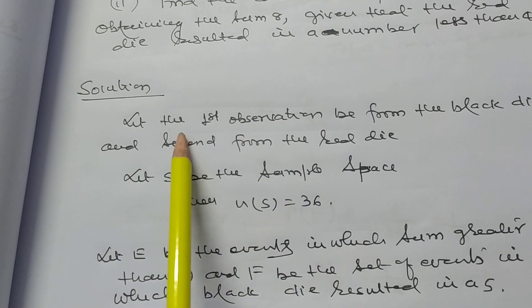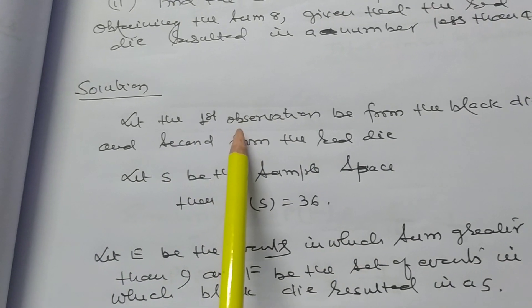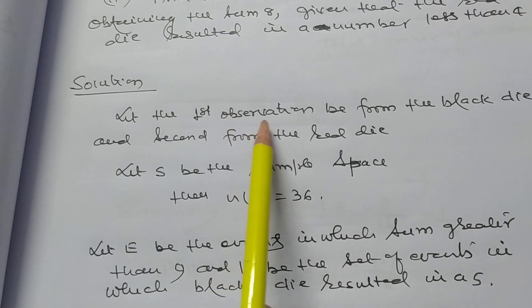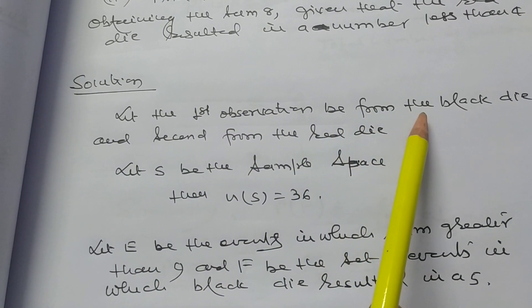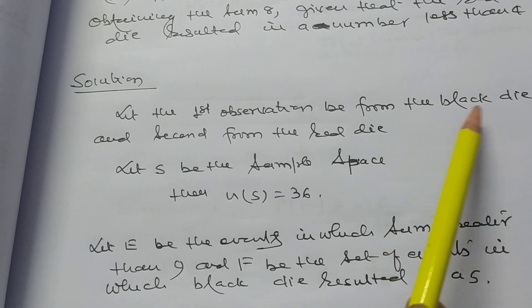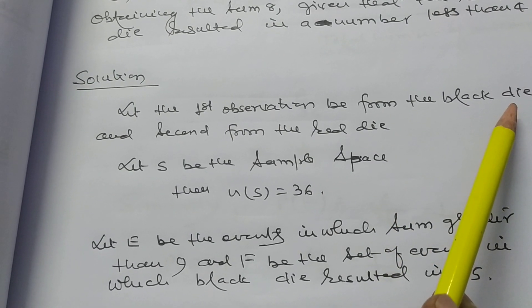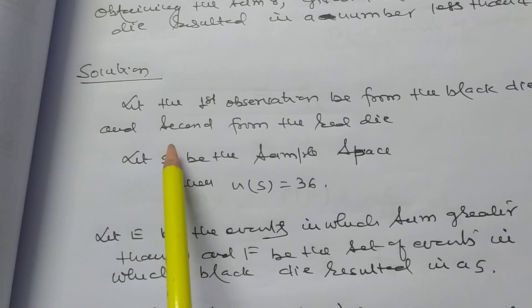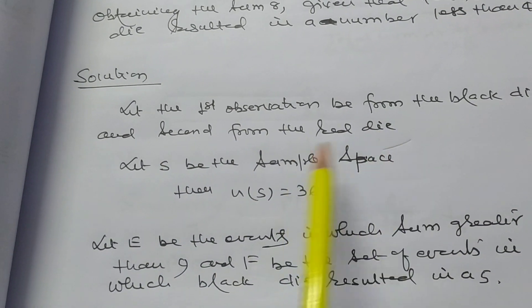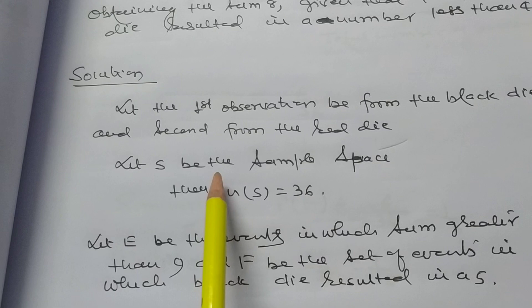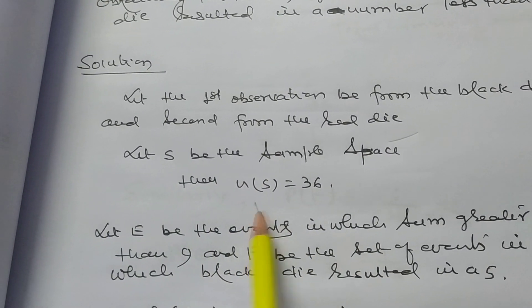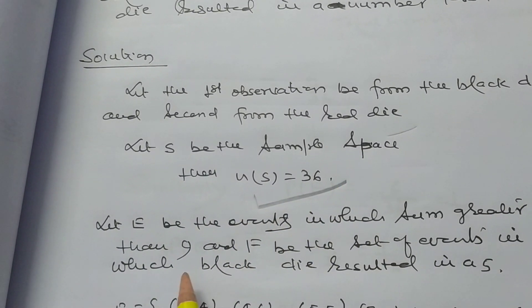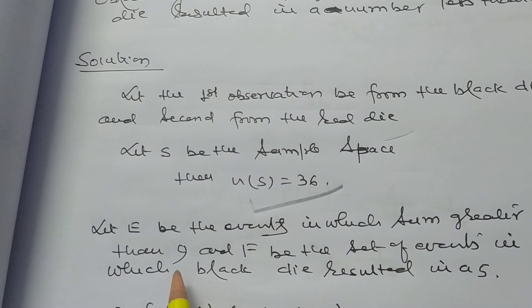Let the first observation be from the black die and the second from the red die. Let S be the sample space; the cardinal number of S is equal to 36.